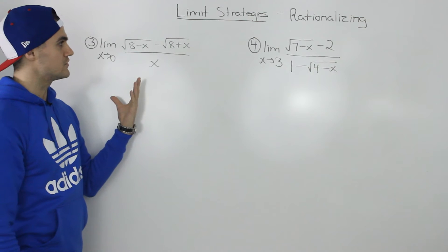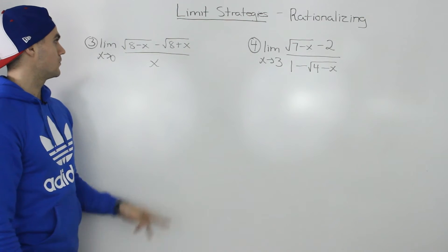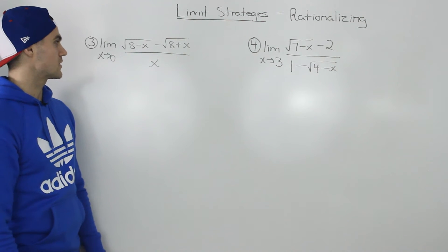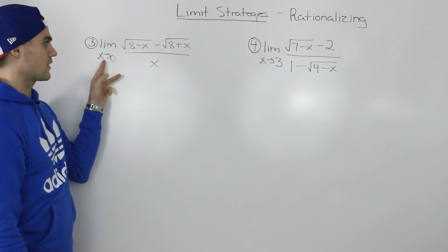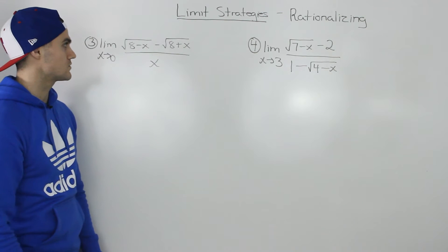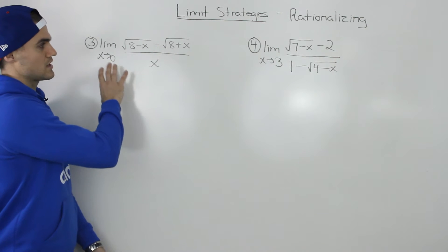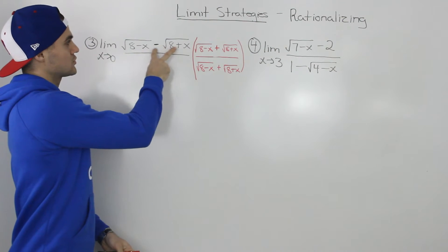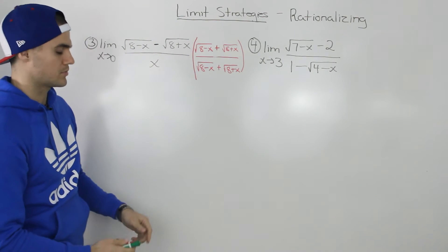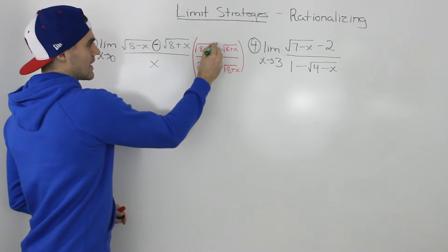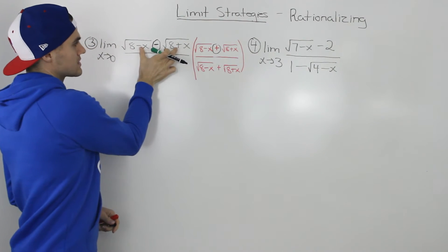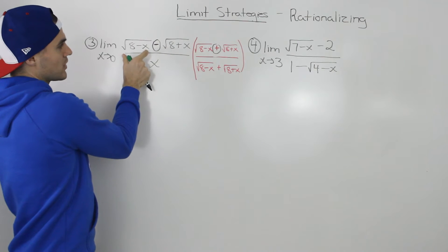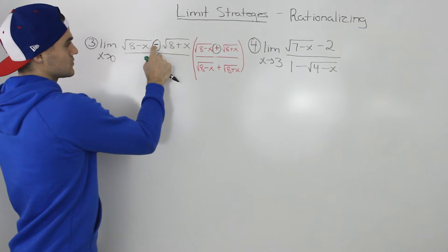Moving on to the third example: the limit as x goes to 0 of the square root of 8 minus x minus the square root of 8 plus x, all over x. Direct substitution fails because the denominator would be 0. So we rationalize the numerator — it's a two-term expression, so we multiply by its conjugate. The conjugate is the square root of 8 minus x plus the square root of 8 plus x. Only the sign in the middle changes — the signs under the radicals stay the same.